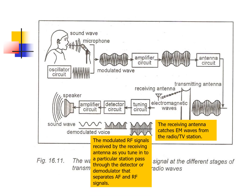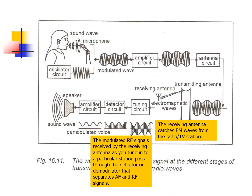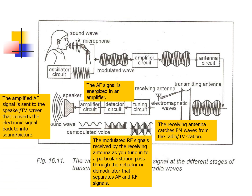The receiving antenna in our houses catches EM waves from the radio or TV station. The modulated RF signals received by the receiving antenna, as you tune in to a particular station, pass through a detector or demodulator that separates the AF and RF signals. This process is called demodulation, where the modulated signal enters a demodulator and removes the carrier wave, leaving the original signal. The AF signal is then energized in an amplifier and sent to the speaker or TV screen, converting the electronic signal back into sound or picture.